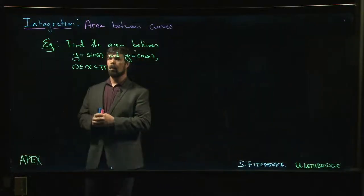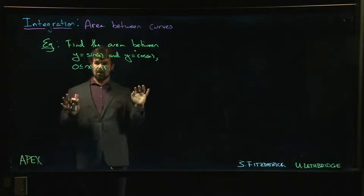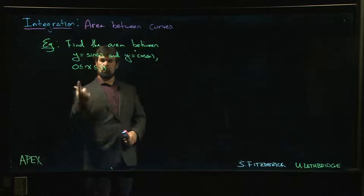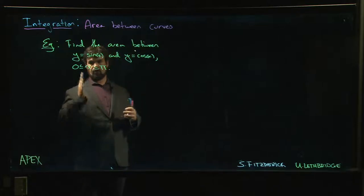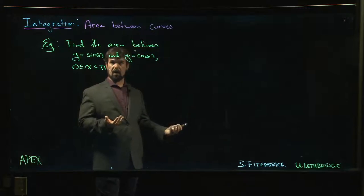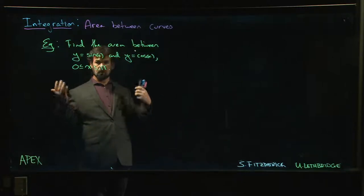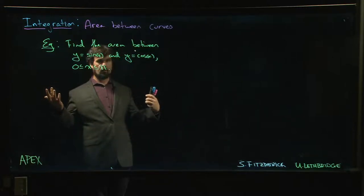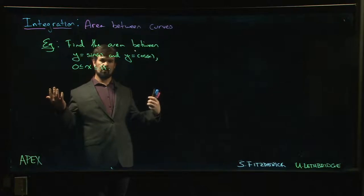Hi, so we have one more area problem. Now this one at first looks like maybe it's simpler than the last one because we're given the bounds on x, right? Start at 0 and end at π. So we should just do the integral from 0 to π, upper minus lower. The question is, what's upper and what's lower?